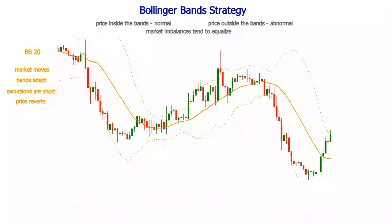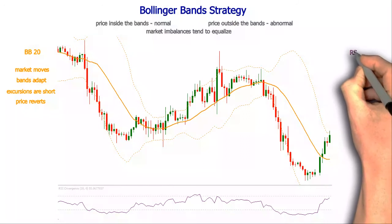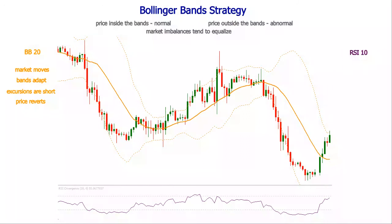To further improve the accuracy of the entries, we can couple the Bollinger Bands with an oscillator. The relative strength index is one such indicator that can offer the confluence we need. Matching the periods of the two indicators will make them walk in step. Having the period of the relative strength index will make it go overbought or oversold more easily. We are looking for places where the price shows exhaustion — the relative strength index can be overbought or oversold.